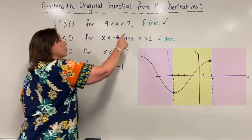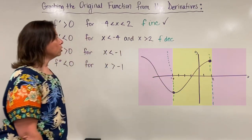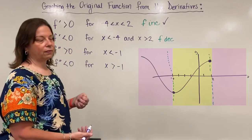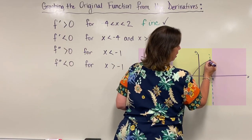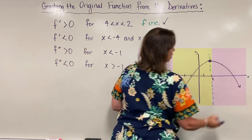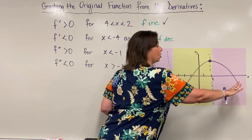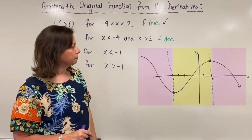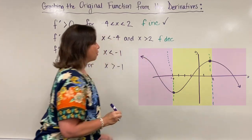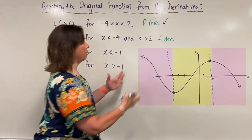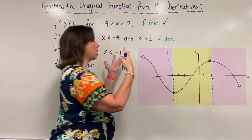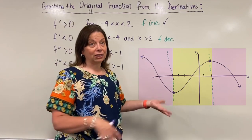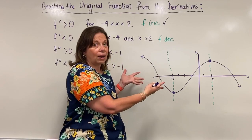In the right zone for x greater than 2, the function is also decreasing since the first derivative is negative. After the dashed line at x = 2, I draw a forever-decreasing function with an arrow, indicating it never turns back up — if it did, the derivative information would have told us. I'll add an arrow on the left side too, since the function decreases across the entire zone from negative infinity to negative 4.